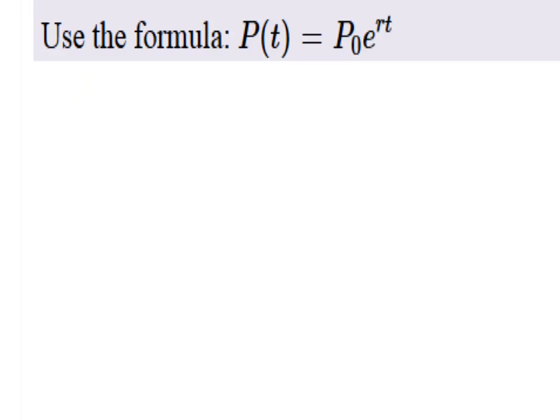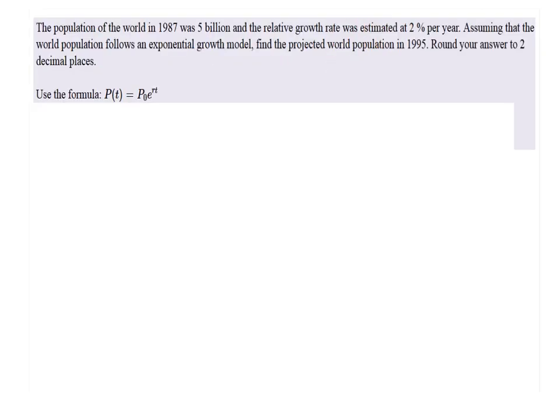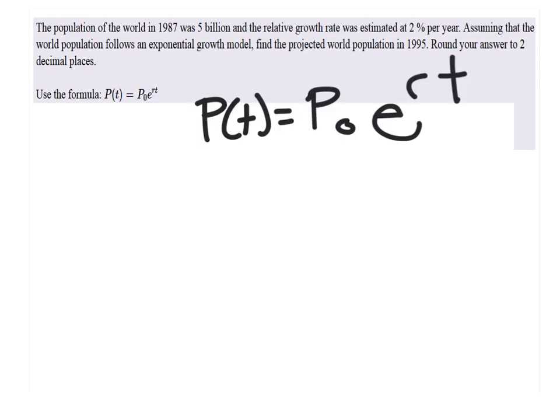But it's important to know what each of these is. P of T is the future population value. P of 0 is the starting population. R is the rate, and T is the time in years. So let's go and write this out bigger so we can see it. Alright, so this is what we have.